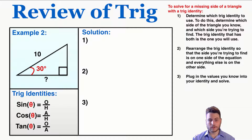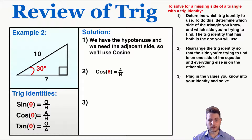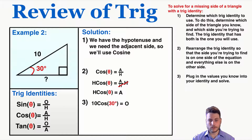Example 2: following those same steps. Here I have the hypotenuse and the adjacent side, so the only identity that connects hypotenuse and adjacent is cosine. Because I'm trying to find the adjacent side, I rearrange the equation to get adjacent by itself. Plugging in my numbers: 10 × cosine(30°) = 8.7, so that will be the length of that side of the triangle.